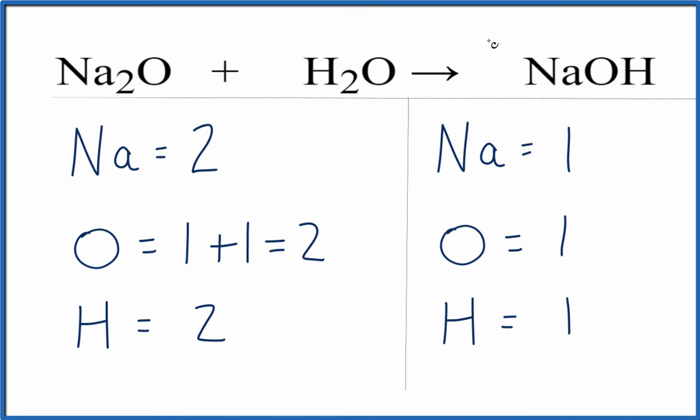So if I put a two right here, that would mean I'd have one times the two. That'd give me two sodium atoms. One times the two, that would give me two oxygens. And one times the two, that would give me two hydrogens.